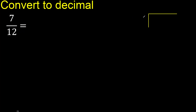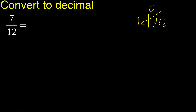7 divided by 12. 7 is less than 12, so complete with 0 — 0 point. Now with 70: 70 is not less, so find the number that 12 multiplied by gives the nearest value to 70 but not greater.